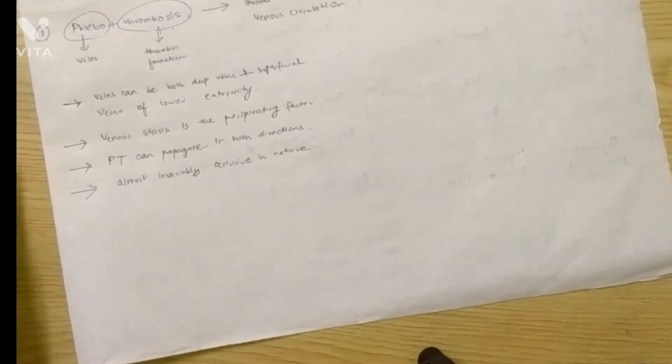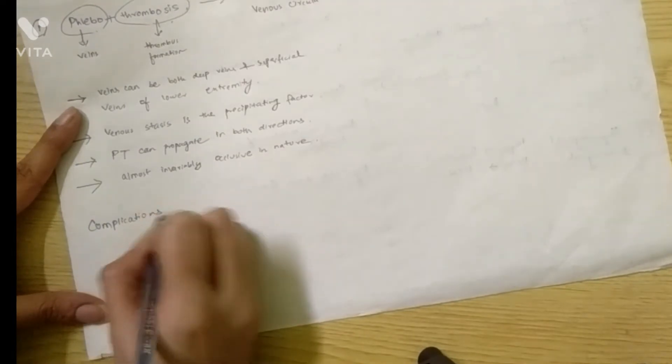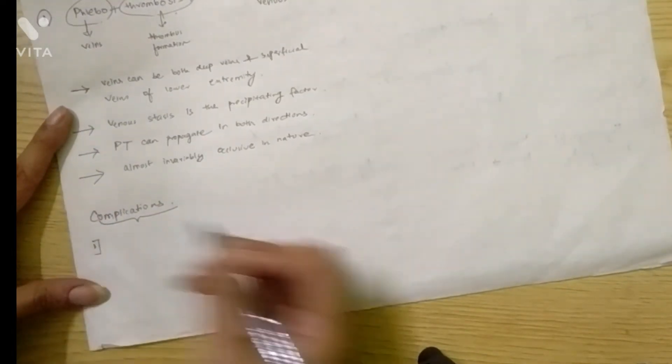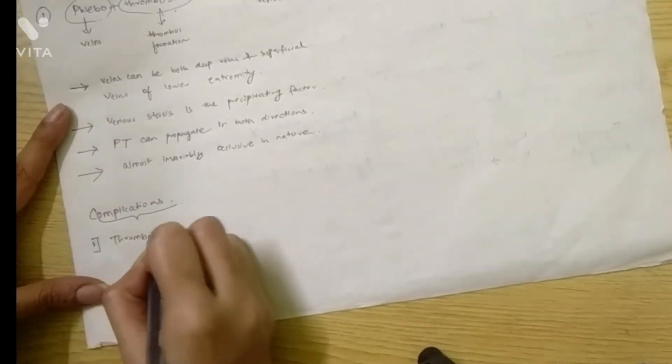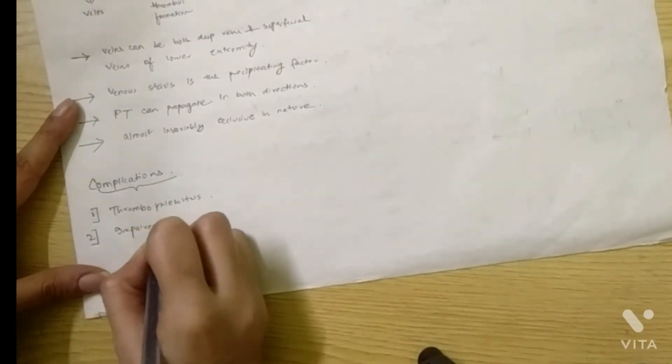Now you have to know about the complications of phlebothrombosis. If phlebothrombosis occurs, what can happen? First, you can have thrombophlebitis, which we will be discussing soon. Second, you can have impaired healing and ulceration.